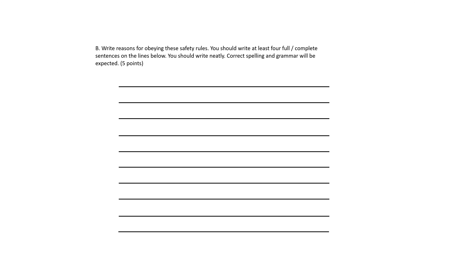You must continue working in teams while working on this do now activity. Part B: write reasons for obeying these safety rules. You should write at least 4 full or complete sentences on the lines below. You should write neatly. Correct spelling and grammar will be expected. This is worth 5 points.